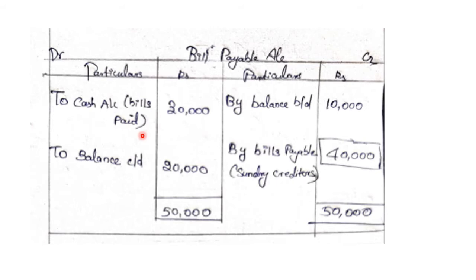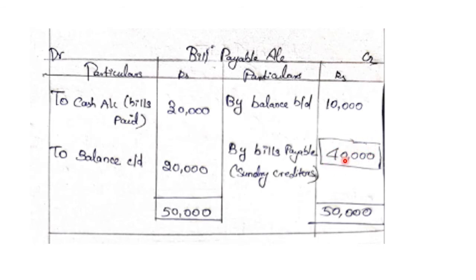To balance brought down — opening balance $10,000. To cash — bills payable paid $30,000. Closing balance $20,000. Total debit side: $30,000 plus $20,000 equals $50,000. So bills payable accepted during the year: $50,000 minus $10,000 equals $40,000.